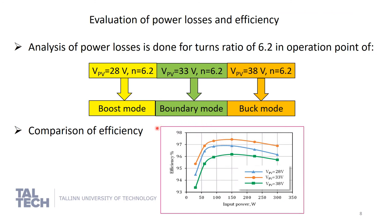For evaluation of power losses and efficiency, the analysis is done for a turns ratio of 6.2. For an input voltage of 28 V, the converter operates in boost mode; for 33 V, the converter operates near the boundary mode but more in buck mode; and for 38 V, the converter operates in buck mode. Comparison between the efficiency of the operation modes shows that the efficiency for the boundary mode is higher than both boost mode and buck mode.